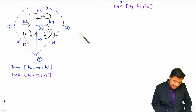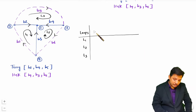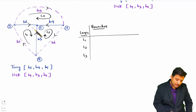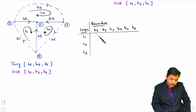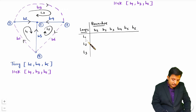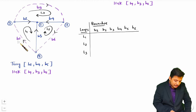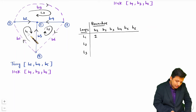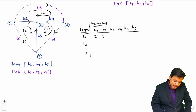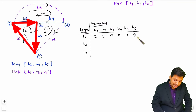When forming the tie set matrix, write loops vertically as fundamental loops and branches horizontally. With this graph we have six branches B1 to B6. For loop 1: B1 is the link in the direction of the loop so it is +1. B2 is also in the direction of loop 1 so it is +1. B5 is in the opposite direction to the loop so it is −1. B3, B4, and B6 are not connected to loop 1 so they are 0.